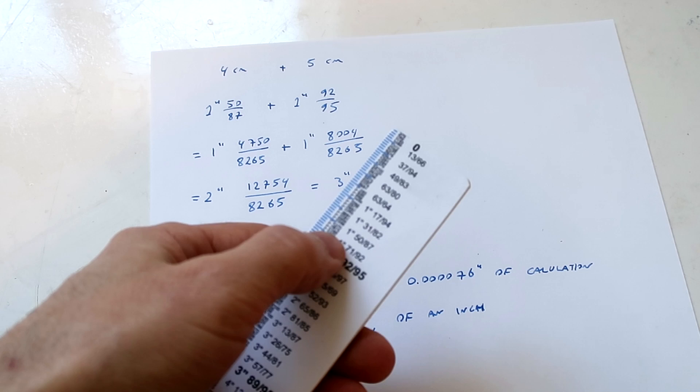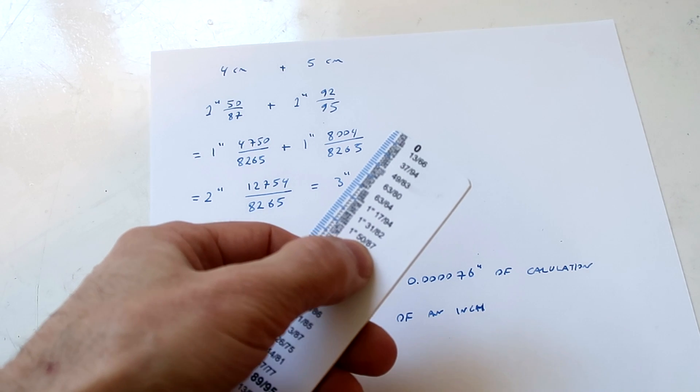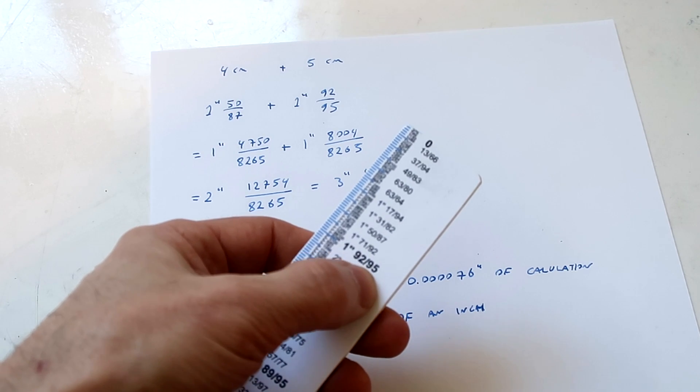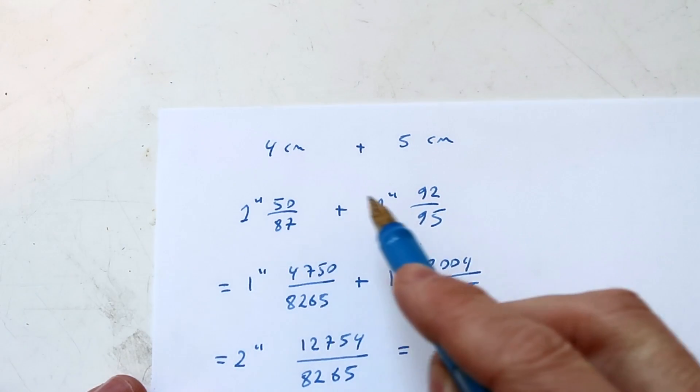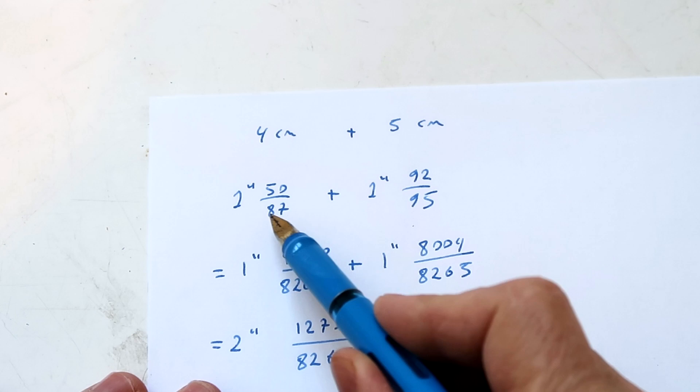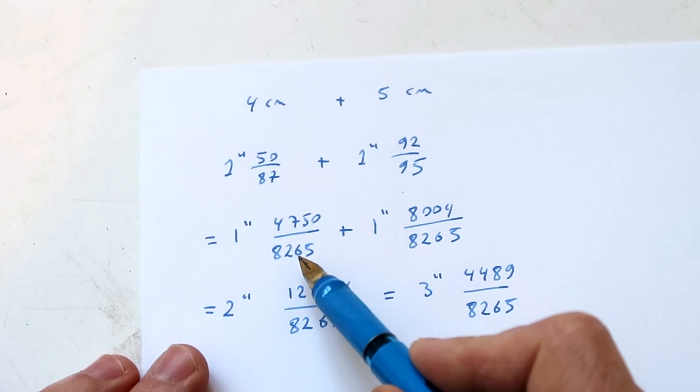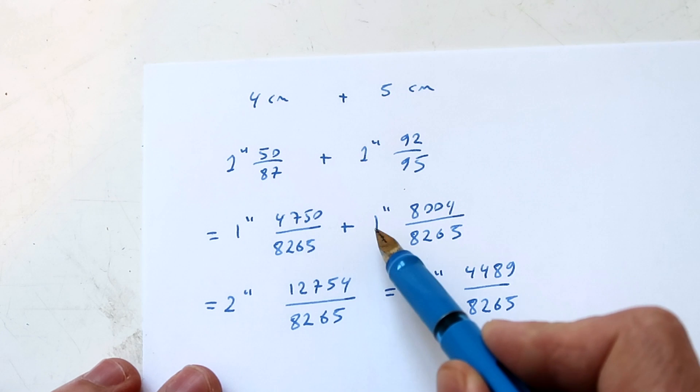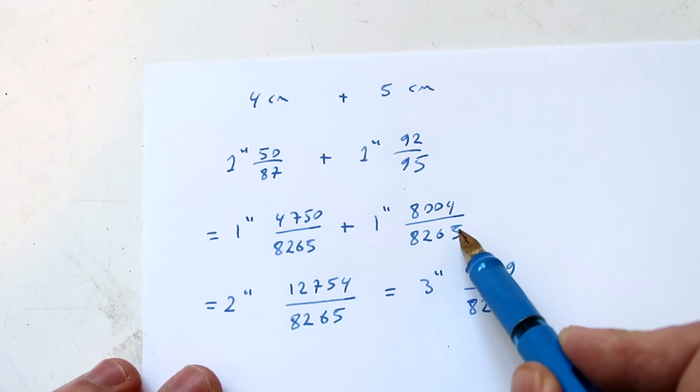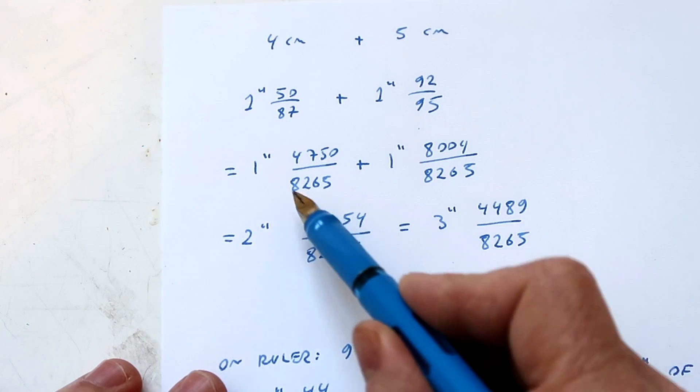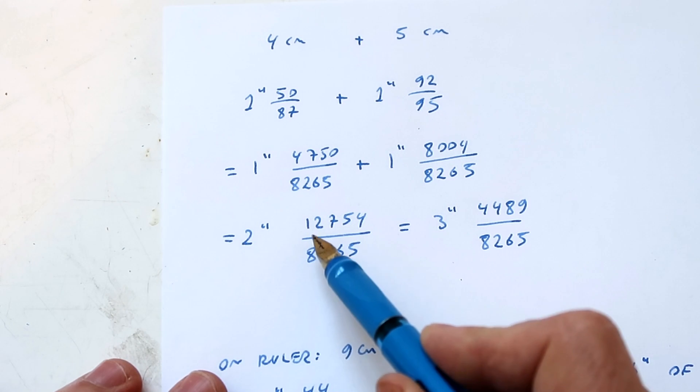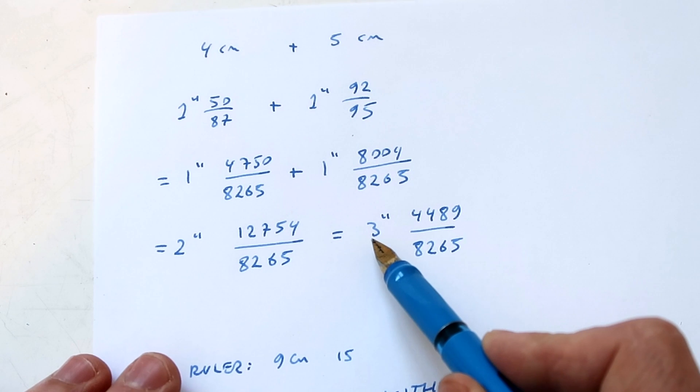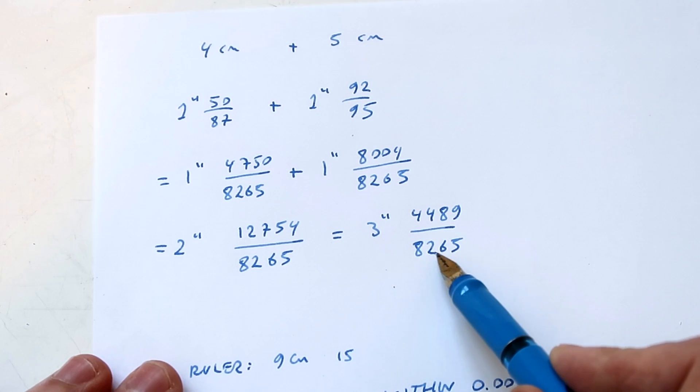So let's take the equivalent of four centimeters which is one inch 50/87 and five centimeters which is one inch 92/95. So we take those two fractions and now we have to multiply those up to get the same denominator. So we get one inch 4750/8265 plus one inch 8004/8265 and now we can add the tops. So that's two inches 12754/8265 or three inches 4489/8265.